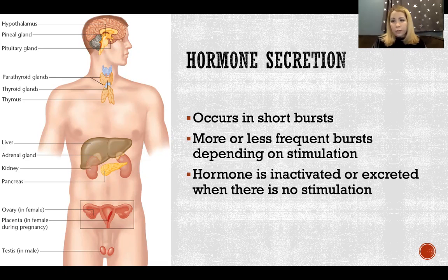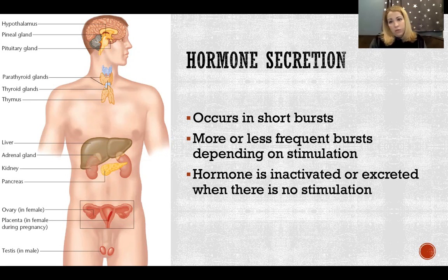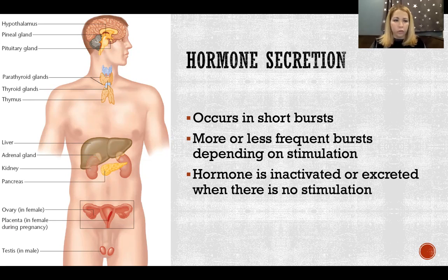When there's less stimulation to secrete, we start to inactivate and excrete those hormones that are already in circulation in the blood. If the body deems that we no longer need as much or any of that hormone in circulation, then the liver and kidneys will start to filter and excrete those hormones.